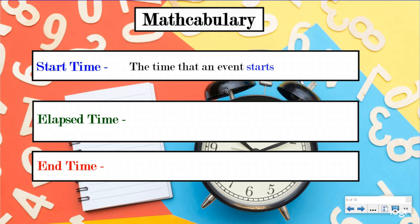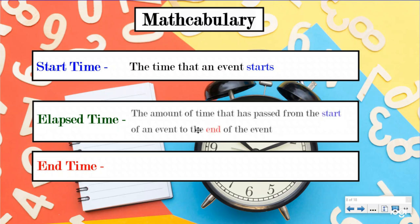An event could be anything - it could be a game, a walk, getting ready for school, or baking something. But it's whenever that event starts. Our elapsed time is the amount of time that has passed from the start of an event to the end of an event. And then our end time is the time that the event ends.